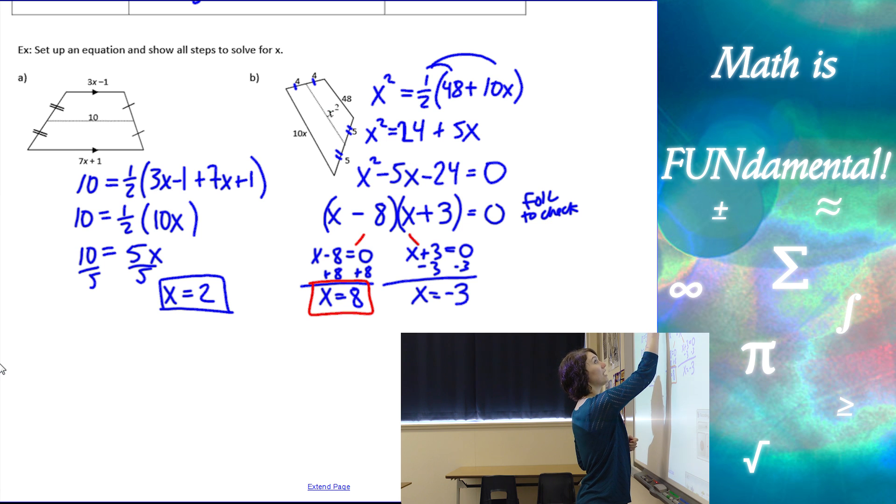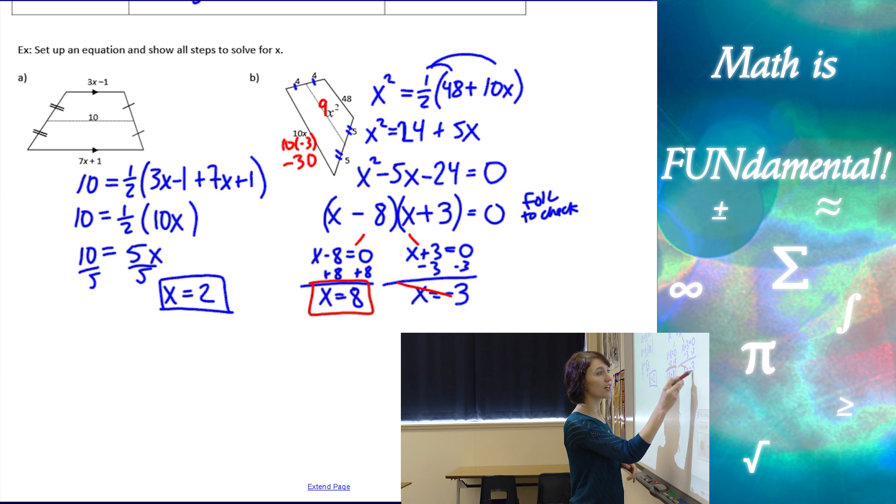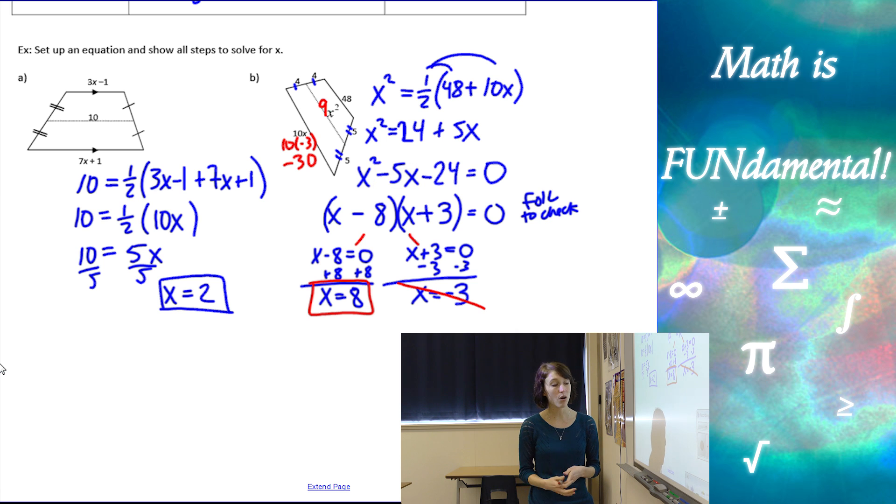Now, if I plug in negative 3 here, 10 times negative 3 is negative 30, and negative 3 squared is 9. Well, we can't have a negative length. So, even if 9 was in the middle of those two things, we're not allowed to have a negative length. So, this answer does not work. So, we have to always think in geometry of plugging our answers back in to our shapes and making sure that they don't violate any laws of physics, like having negative lengths.